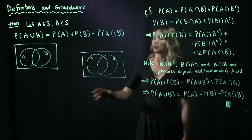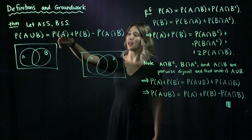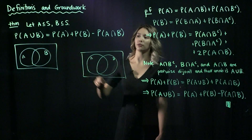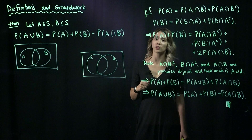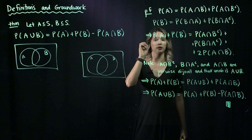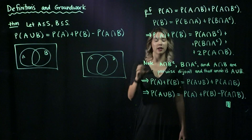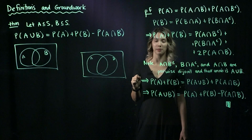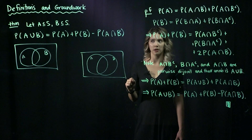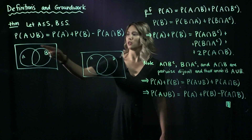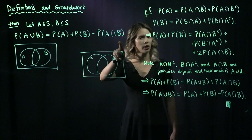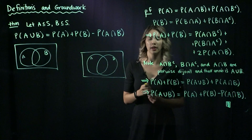So let's think about this again. We have two events in S, and we're looking for the probability of their union. What we can do is find the probability of one, add it to the probability of the other, and then subtract off the probability of the intersection. For a lot of students, this first part makes sense, and then they wonder: why are we subtracting off the intersection?